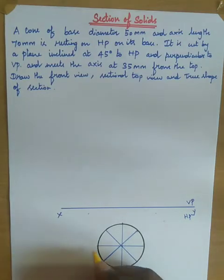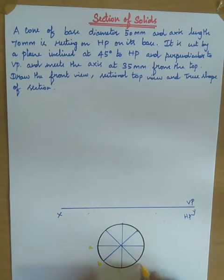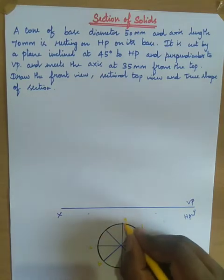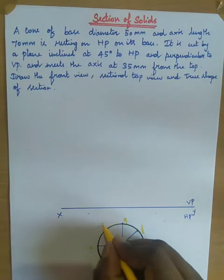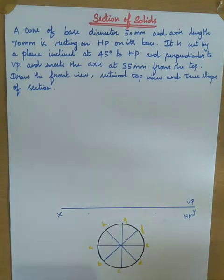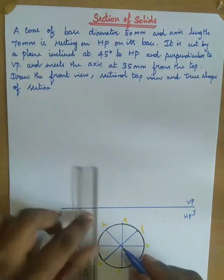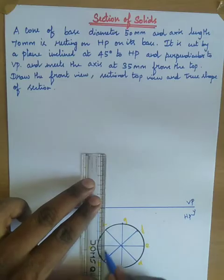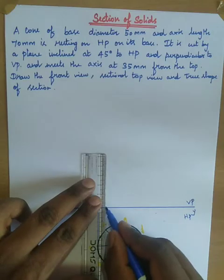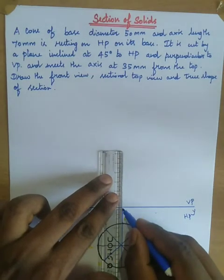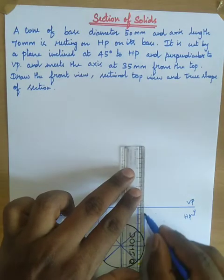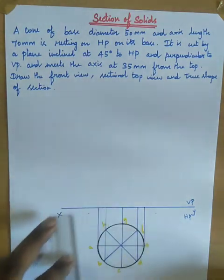So now we have divided the circle into 8 equal halves. Name the points on the circle as A, B, C, D, E, F, G, and H. Now extend the projector lines in order to develop the front view section.